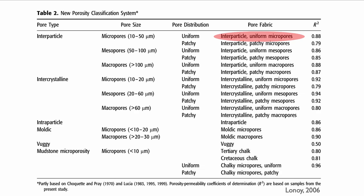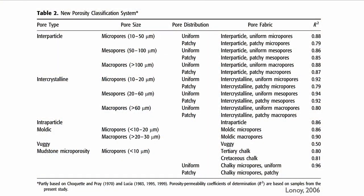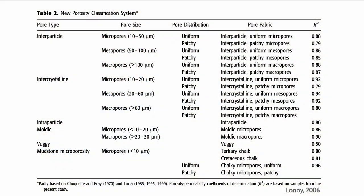The really interesting thing is to look at the square R — the last column — which is how well you can actually fit a predicted line through data points. Those square R values are pretty high for all of the classifications except for the vuggy porosity. Vuggy porosity is always problematic — it's essentially a toss of the coin, around 50%.